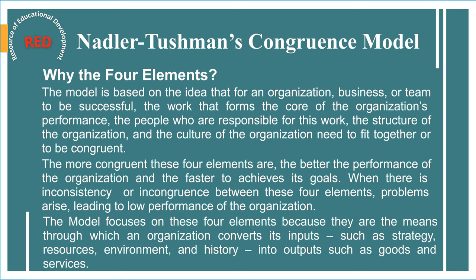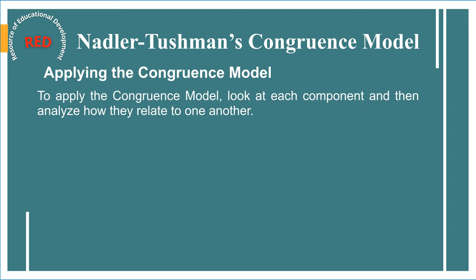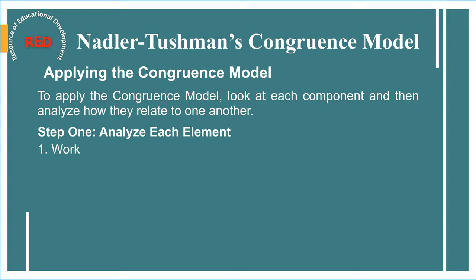To apply the congruence model, we look at each component and analyze how they relate to one another. Step one, element one — work: start by looking at the critical tasks that underpin your organization's performance from two perspectives — what work is done and how it is processed. Consider what skills or knowledge individual tasks require, whether they are mechanical or creative, and how the work flows. Identify approaches that work best, such as quick, thorough, empathic, analytical, precise, or enthusiastic, and what the stresses and rewards of the work are.